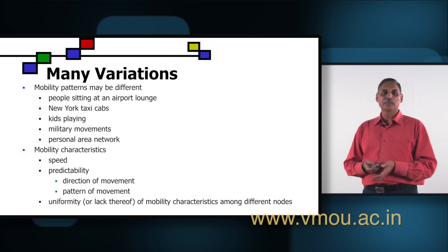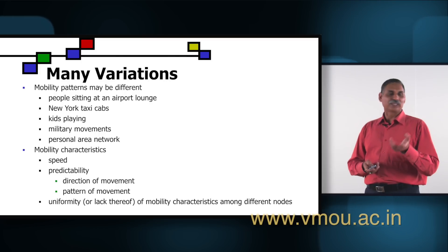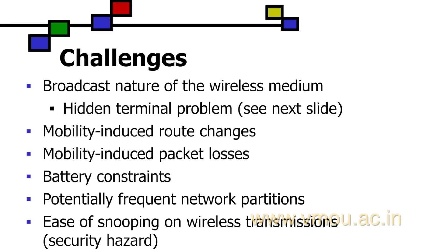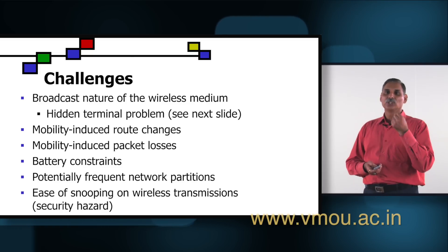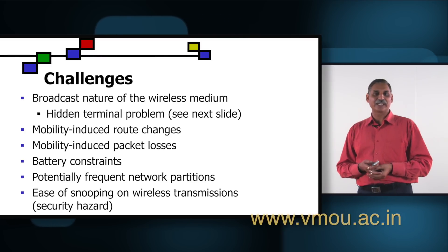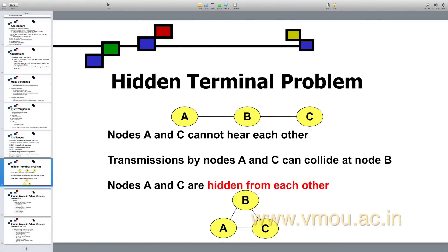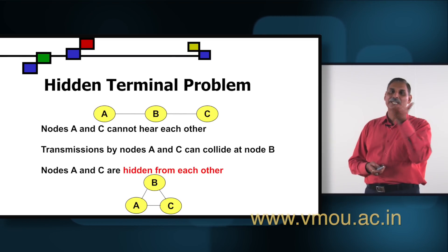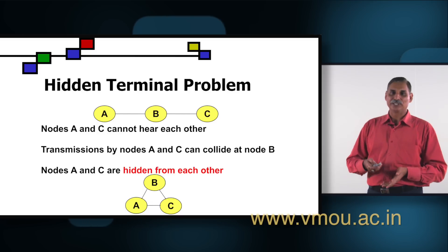Mobility characteristics include speed, predictability, direction of movement, pattern of movement, and uniformity among nodes. The challenges include the broadcast nature of the wireless medium, which leads to the hidden terminal problem. Mobility-induced route changes, mobility-induced packet losses, and battery constraints — since each mobile device has a limited battery — are key challenges, along with potential frequent network partitions, ease of snooping on wireless transmissions, and security hazards. The hidden terminal problem occurs when node A wants to send to C but they cannot hear each other directly; transmissions from A and C may collide at B, since B can hear both. So nodes A and C are hidden from each other but can communicate via node B.